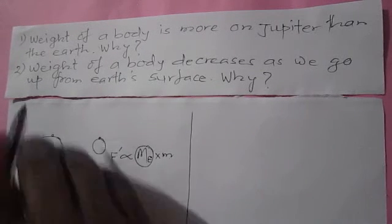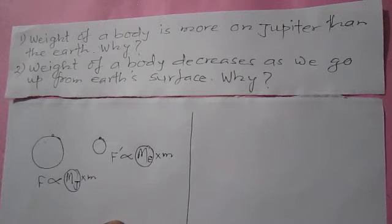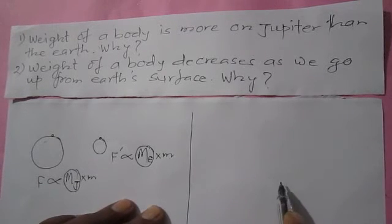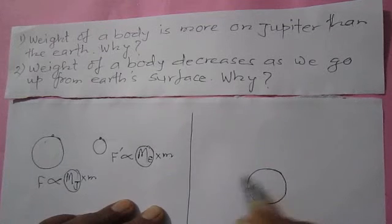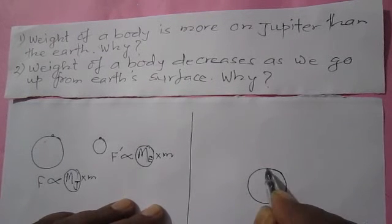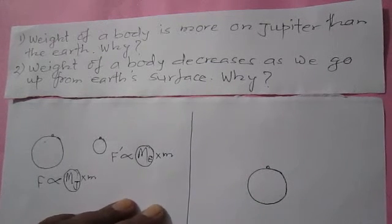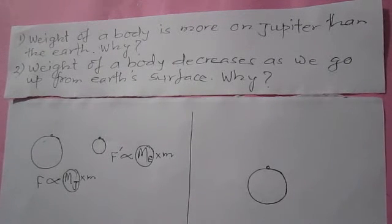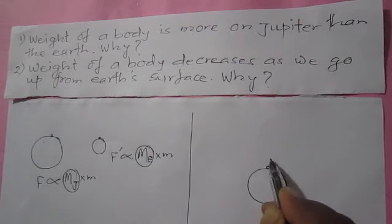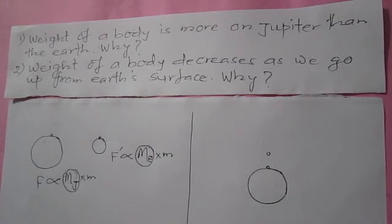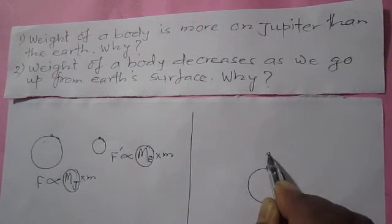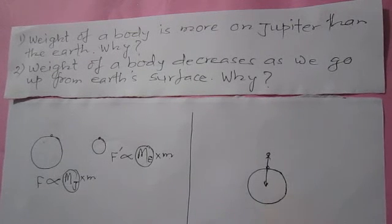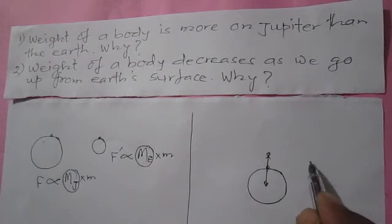Now let's talk about the second question: weight of a body decreases as we go up from a surface — why? Let's say this is Earth and a body is on the surface. The gravitational force between the Earth and this body is the weight of the body on Earth. But if the same body is taken to a height, the gravitational force between the Earth and the body is now the weight of the body at that height, and since the distance has increased, the gravitational force decreases.